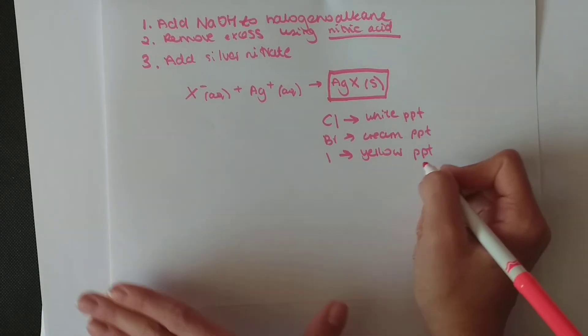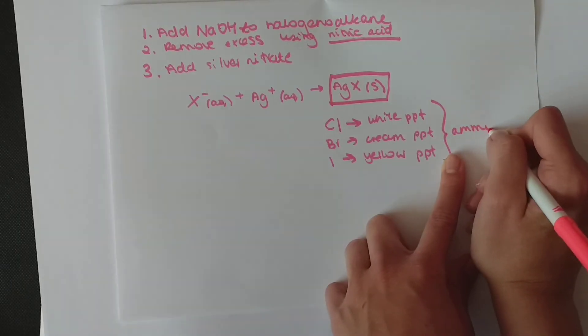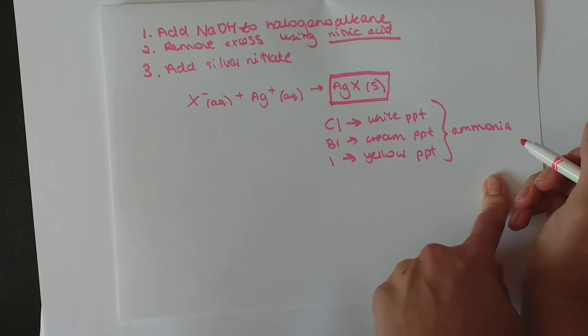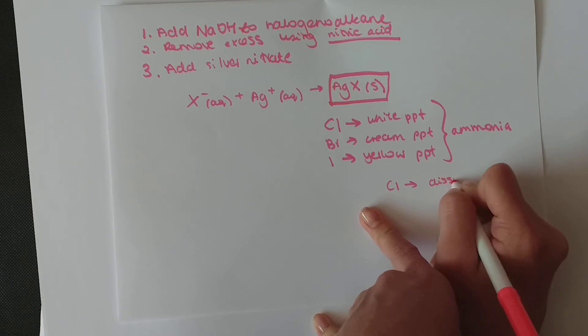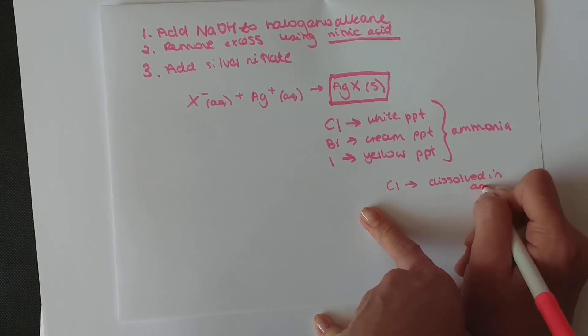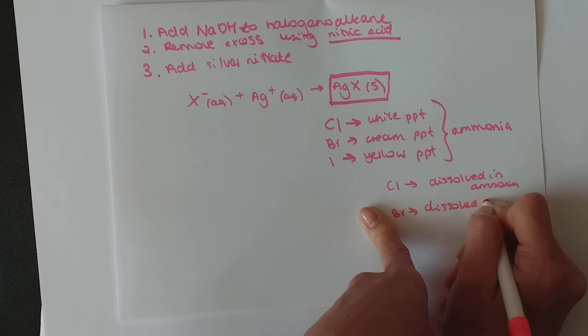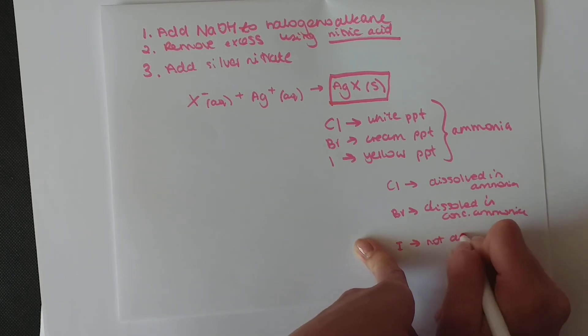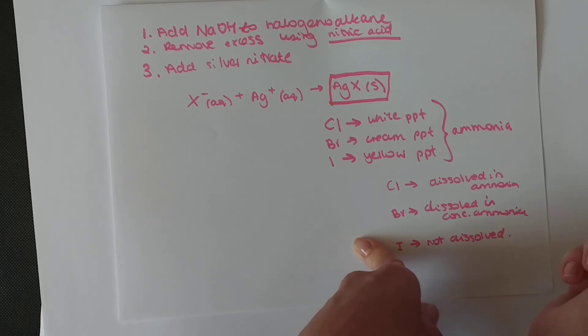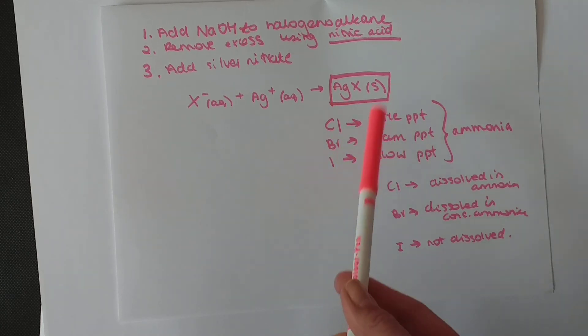If you're not too sure what color you've got, you can also add ammonia. This is a further test with ammonia. If it's a chlorine, it will be dissolved in ammonia. If it's a bromine, it's going to be dissolved in concentrated ammonia. And if it's iodine, it's not going to be dissolved. So this is a further test for halogen alkanes if you're not too sure what precipitate you got.